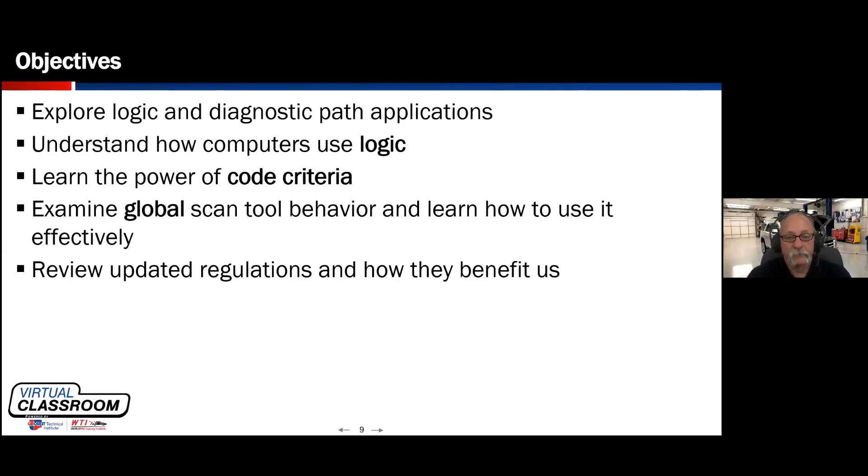We're going to look at how computers use logic. Everything that a computer does is based on logic. And we use logic to help solve our problems. We apply a logical thought process. That's what the computer does, too. It just does it a little bit differently. We have to remember when we're dealing with a computer, your computer is only as smart as the person that programmed it, which falls into our third bullet point of looking at the code set criteria.